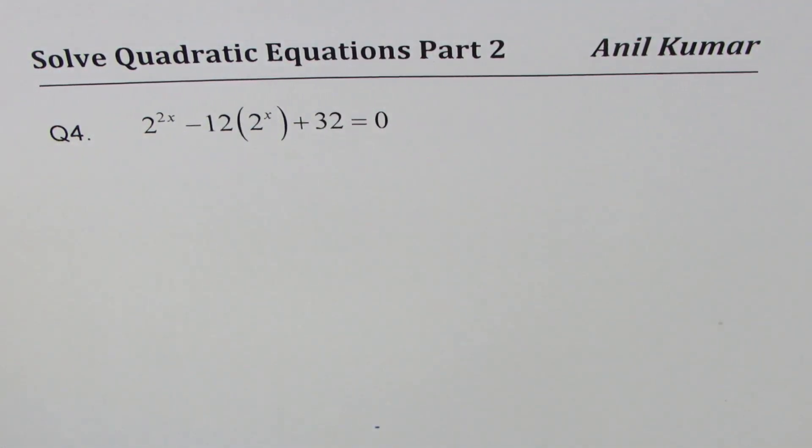I am Anil Kumar. We are exploring different strategies to solve quadratic equations in part 2. Question number 4 here is 2 to the power of 2x minus 12 times 2 to the power of x plus 32 equals to 0.